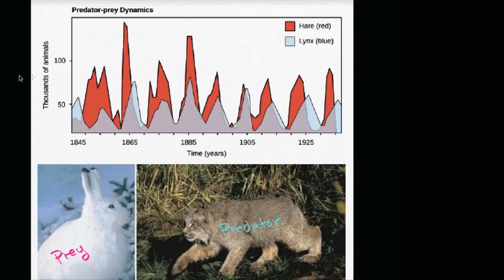And as you see, when the predator population is high, when we have a lot of the Canadian lynx around, we see a lower population of the prey, of the hare.